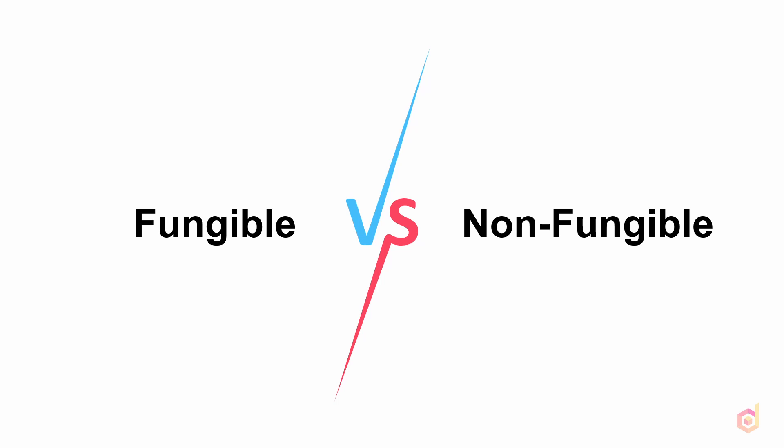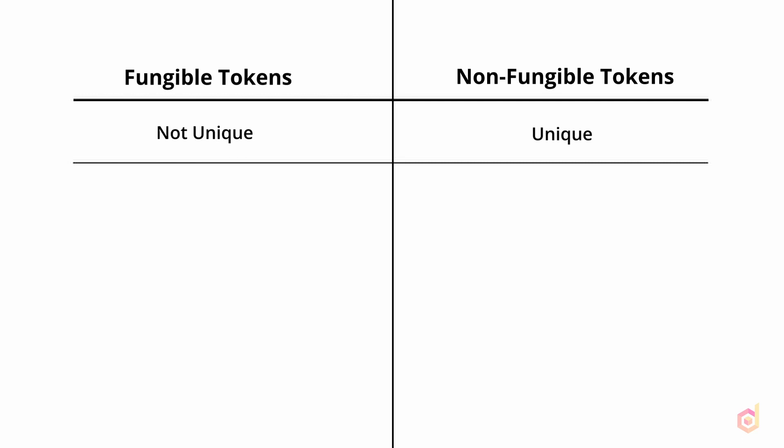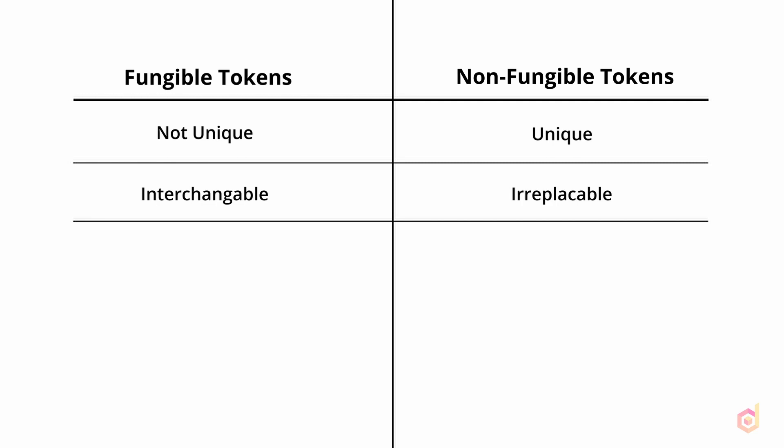Let's understand the difference between these two tokens with a table. On the left we have fungible tokens and on the right we have non-fungible tokens. Fungible tokens are not unique, whereas non-fungible tokens are unique. Fungible tokens are interchangeable — you can interchange one fungible token with another and it won't affect anyone. But non-fungible tokens are irreplaceable, meaning each non-fungible token has its own value.